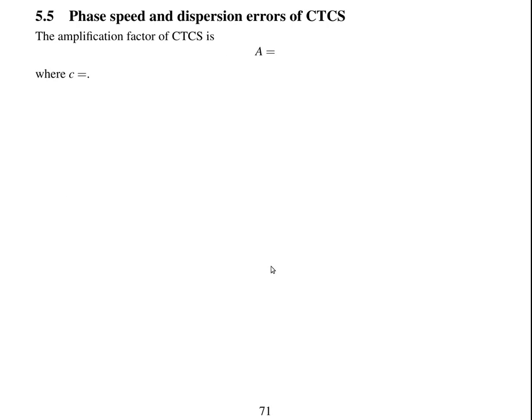So let's have a look at the phase speed and dispersion errors of the centered-in-time, centered-in-space advection scheme. We'll start from the amplification factor for CTCS. This is the amplification factor for CTCS, where c is the Courant number, u delta t over delta x.